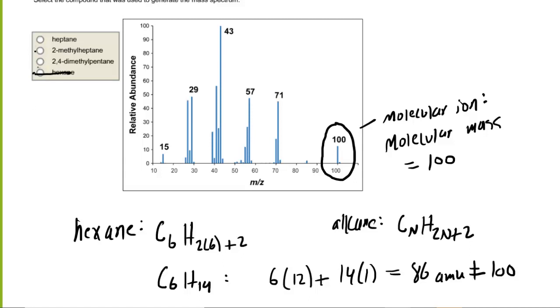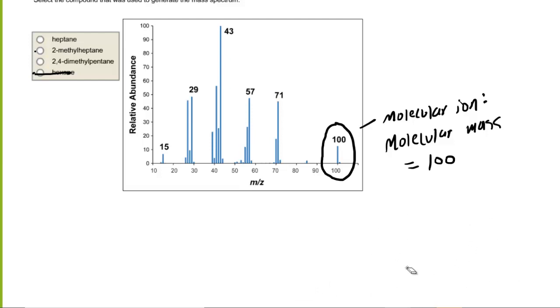We can next perhaps take a look at 2-methylheptane. Let's clear out the workspace here a little bit, and we've got to figure out how many carbons are in 2-methylheptane. We could draw it out. Perhaps heptane has 7 carbons, so 2, 3, 4, 5, 6, 7, and then at carbon 2 we have an extra methyl group.